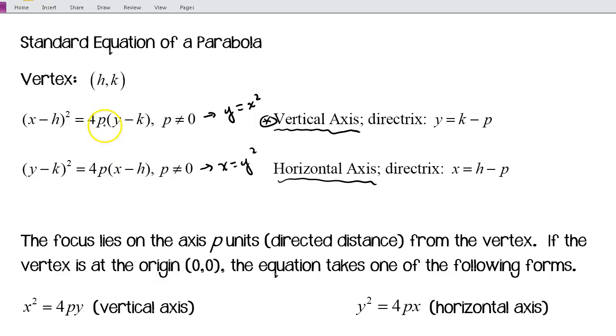Notice in both of these, in front of the linear term on the right side, we have this 4p. We're going to talk a lot about that. And we have h and k, and h always goes with the x. Notice it's with the x over here. k always goes with the y.